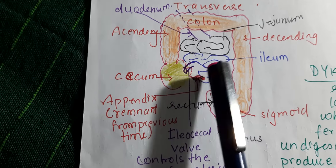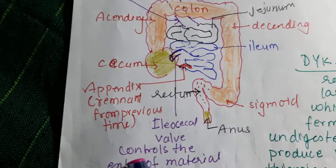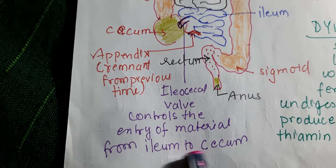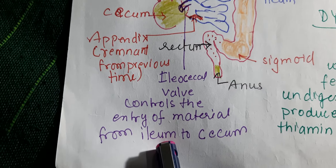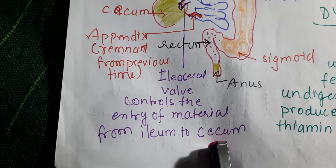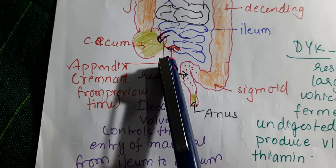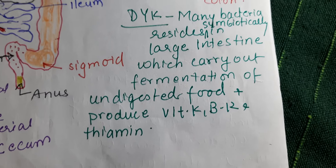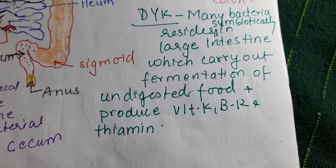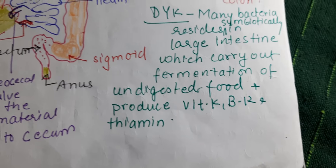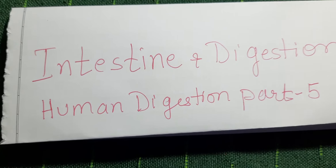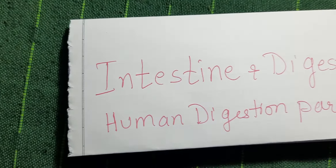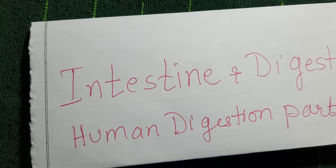The opening between the small and large intestine is called the ileocolic valve, which controls the entry of material from ileum to cecum. Ileum is the posterior portion of small intestine and cecum is the anterior portion of large intestine. The appendix, which is the remnant or vestigial organ, is present here. Many bacteria symbiotically reside in large intestine and carry out fermentation of undigested food, producing vitamin K, B12, and thiamine.